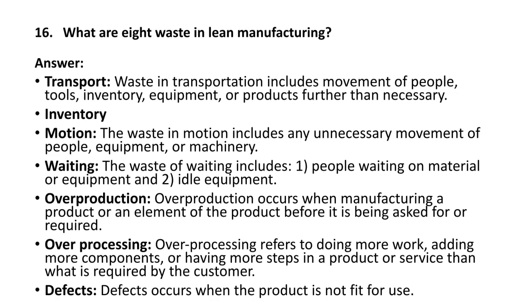Next question: what are the eight wastes in lean manufacturing? The first waste is transport. Waste in transportation includes movement of people, tools, inventory, equipment, or products further than necessary. Excess movement of tools, people, inventory, equipment, or products at a shop floor is a kind of waste under transport. The second waste is excess inventory at your shop floor — that is also a waste.